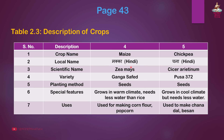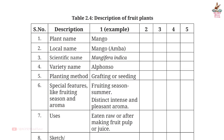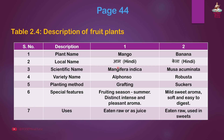Fourth crop: Maize. Local name: Makkah in Hindi. Scientific name: Zea mays. Variety: Ganga Safed. Planting method: Seeds. Special features: Grows in warm climate, needs less water than rice. Uses: Used for making corn flour. Fifth crop: Chickpea. Local name: Chana in Hindi. Scientific name: Cicer arietinum. Variety: Pusa 372. Planting method: Seeds. Special features: Grows in cool climate but needs less water. Uses: Used to make chana dal and besan.